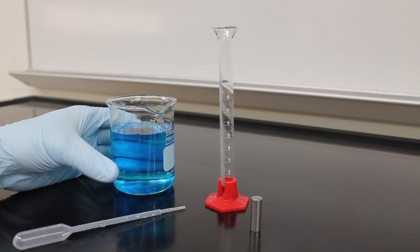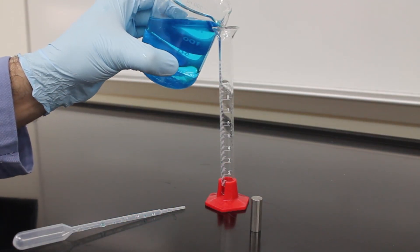Using a graduated cylinder, you can also obtain the volume of a solid object. To do this, fill your graduated cylinder with enough liquid to cover the object.